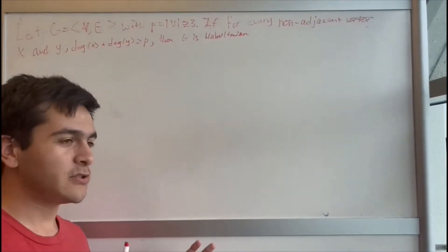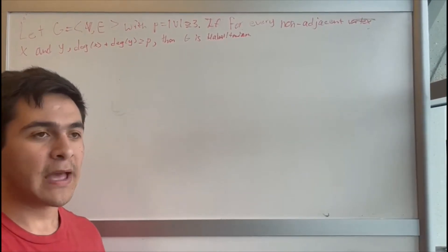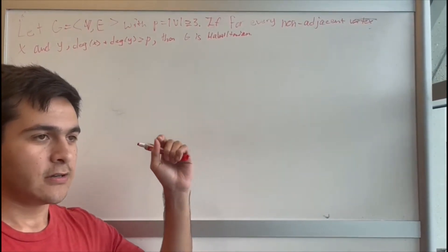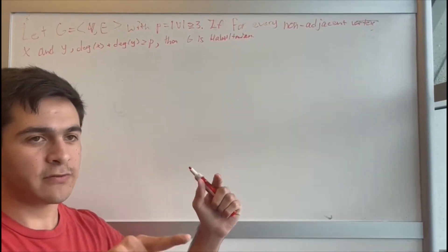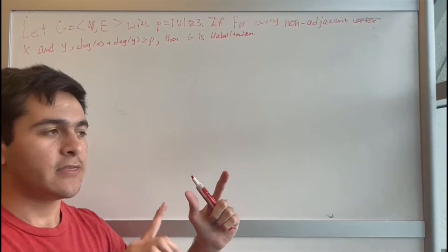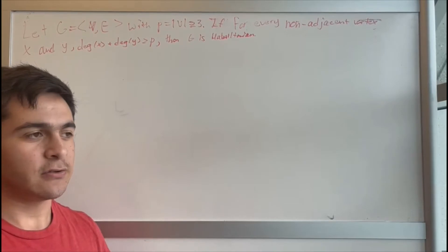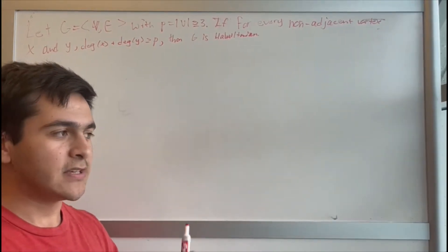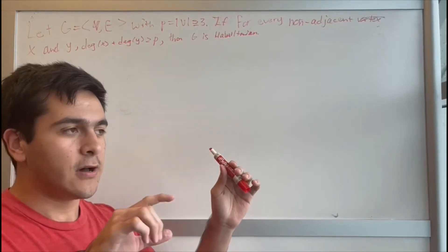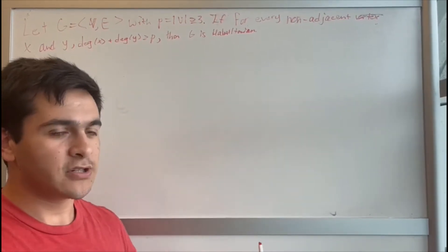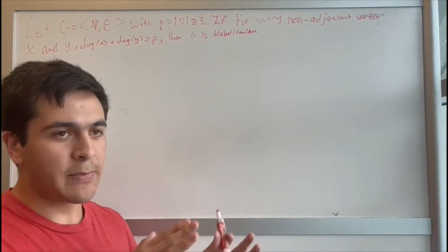Just a refresher on terminology: a Hamiltonian path is where you start on one vertex of the graph and traverse the graph so that you touch every vertex exactly one time, but you don't return to the original vertex. A Hamiltonian cycle, on the other hand, is where you start at one vertex, traverse all vertices exactly once, and then return to the original vertex.